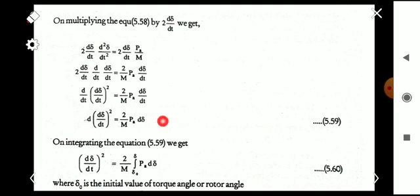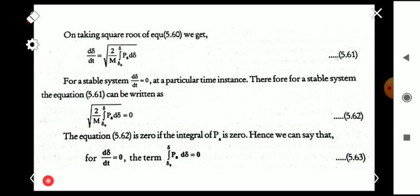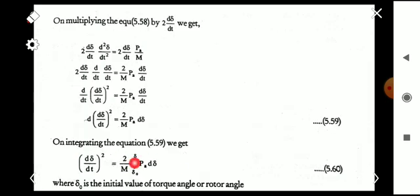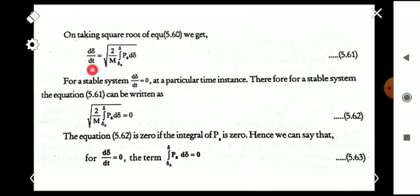Integrating both sides, the left-hand side becomes (d delta by dt) squared. The right-hand side, since 2 by M is a constant, becomes (2 by M) times the integral from delta_0 to delta of P_a d delta, where delta_0 is the initial value of the torque angle. Taking the square root of both sides: d delta by dt equals the square root of (2 by M) times the integral from delta_0 to delta of P_a d delta.